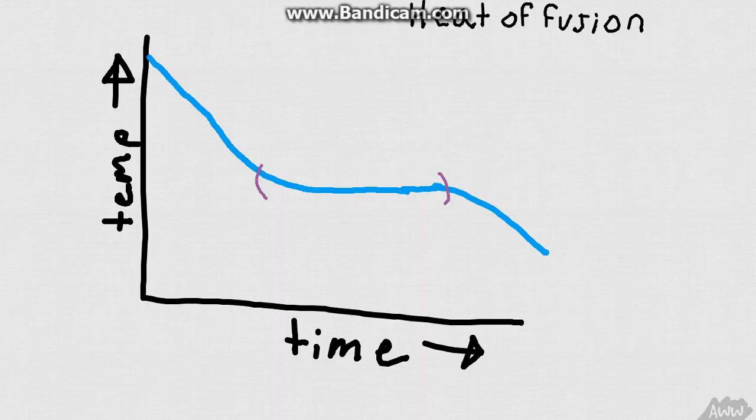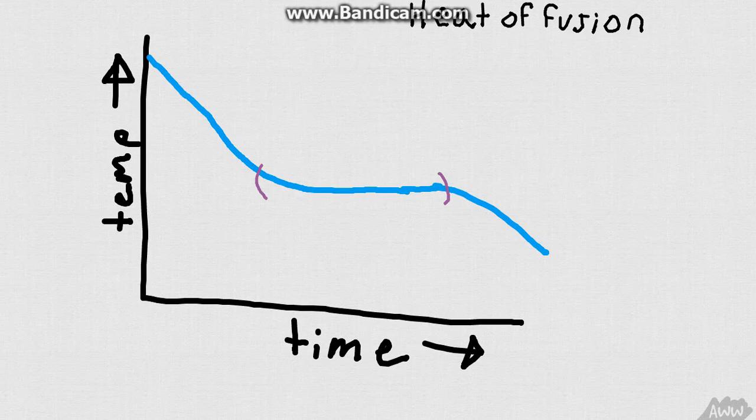So I thought it would be good to start off with a graph that talks about what we did in class. So we took the temperature of acetic acid as it froze and we took it at different points in time. Using those points in time we constructed a graph of its temperature versus its time.